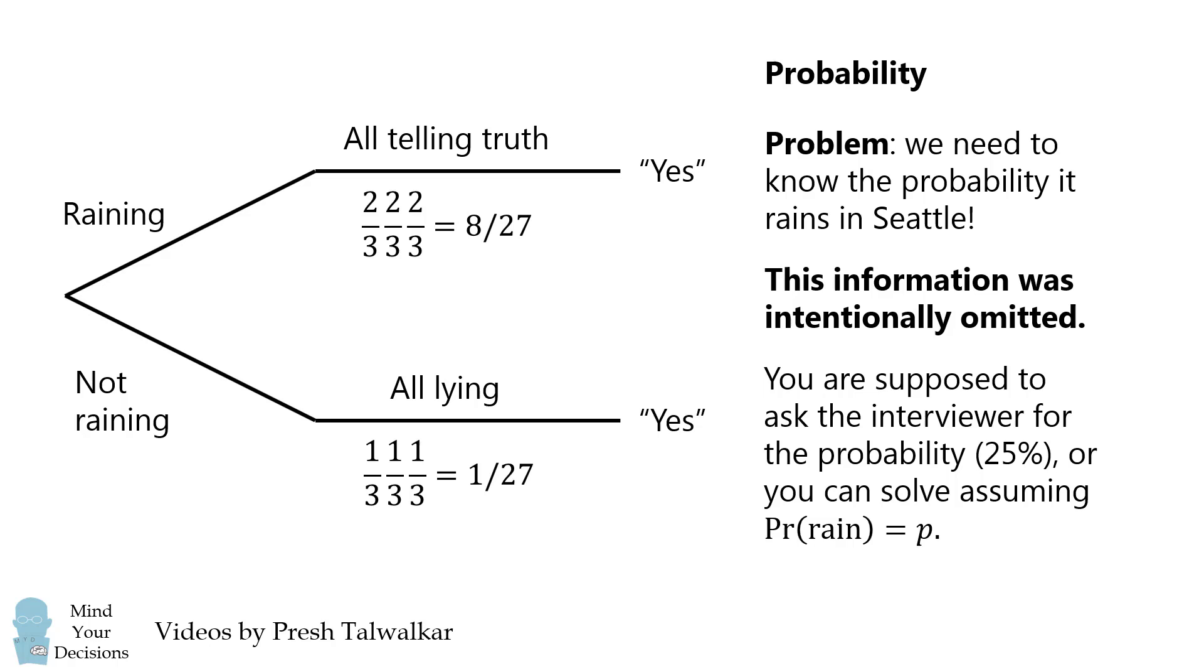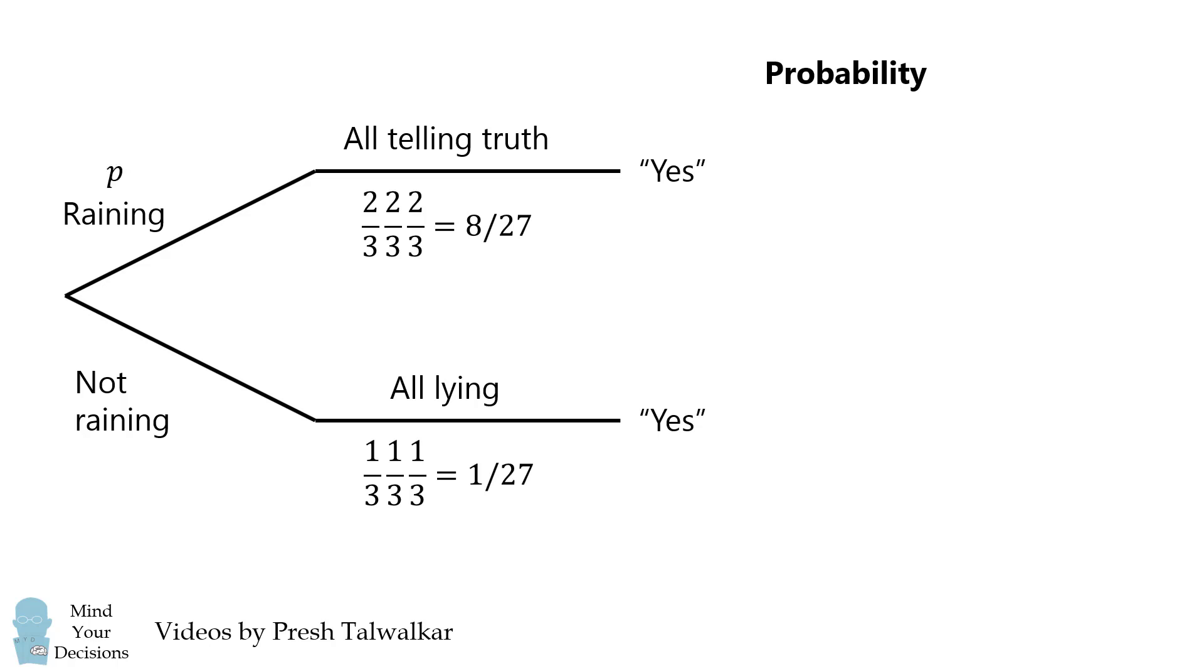So let's solve for the general case. We'll write the probability of rain is equal to P, so the probability that it does not rain is 1 minus P.